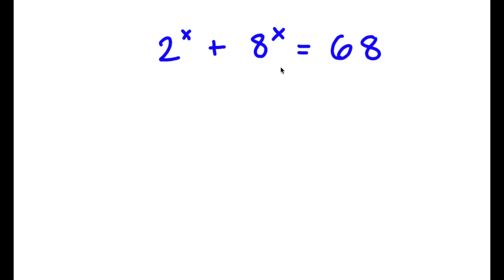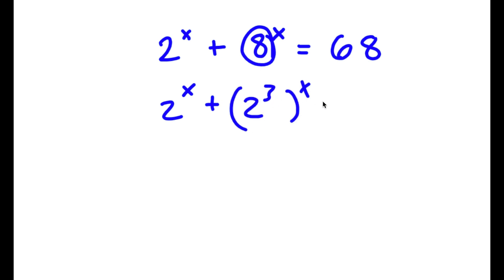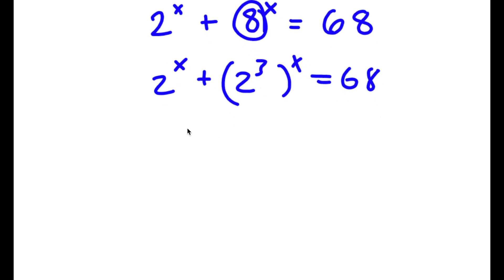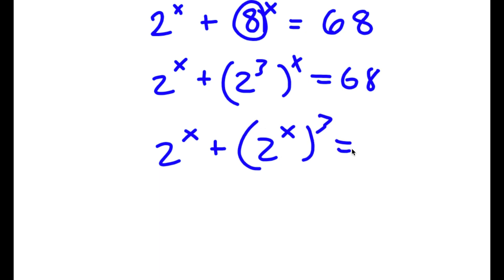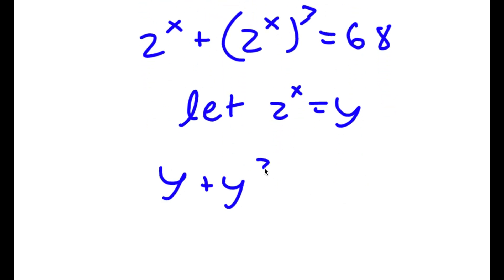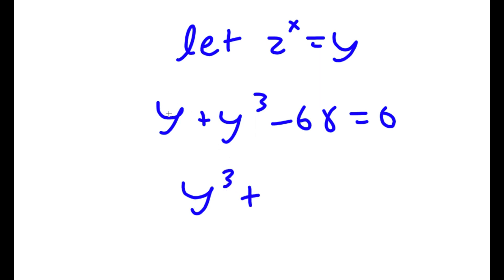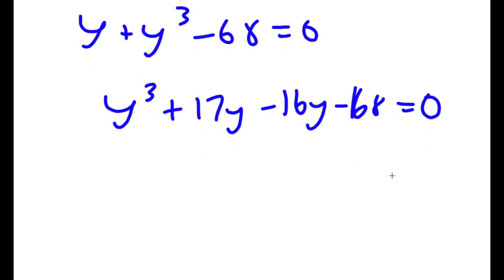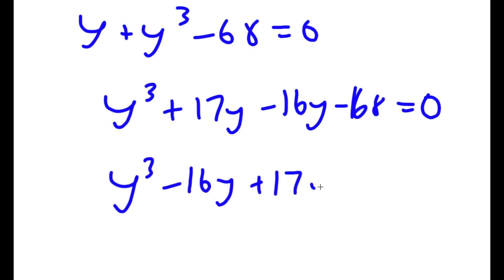In this problem, I have 2 to the power of x plus 8 to the power of x equals 68. First, I rewrite 8 as 2 to the power of 3, so 8 to the power of x becomes 2 to the power of 3x. Rearranging, I have 2 to the power of x plus (2 to the power of x) to the power of 3 is equal to 68. Now letting y equal 2 to the power of x, I have y plus y to the power of 3 minus 68 is equal to 0, which I rewrite as y cubed plus 17y minus 16y minus 68 equals 0.